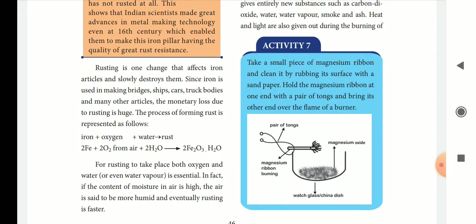We have to protect bridges, ships, and cars from rusting. The rusting process is: Fe + oxygen + water = rust. Iron reacts with oxygen and water to form rust. Rust is Fe2O3·H2O — that is its formula.